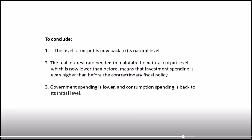To conclude: the level of output is now back to its natural level in the medium term. The real interest rate needed to maintain natural output is now lower than before, meaning investment spending is even higher than before the contractionary fiscal policy. Government spending is lower, and consumption spending is back to its initial level.